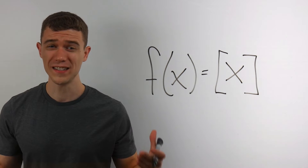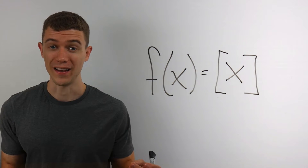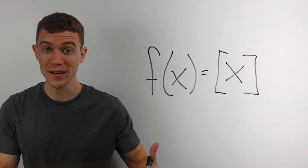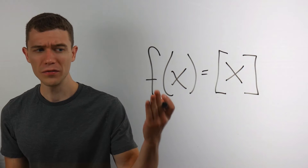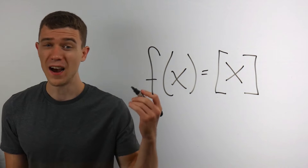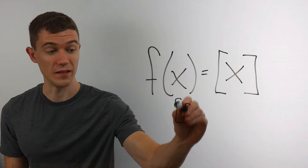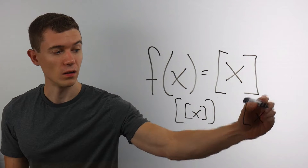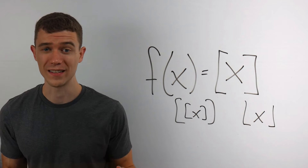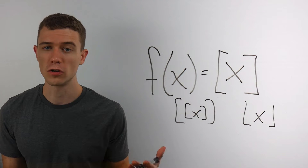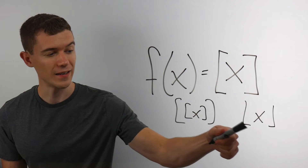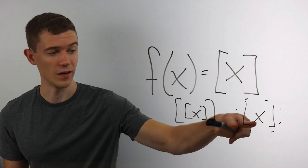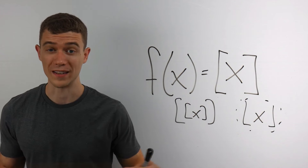This is the so-called greatest integer function — it outputs the greatest integer of X. I've seen it denoted in a few ways: with the standard bracket notation, with a double bracket, and also with just the lower brackets. Sometimes the greatest integer function is called the floor function, and that lower bracket notation is usually what people mean — the little lower brackets make a floor.